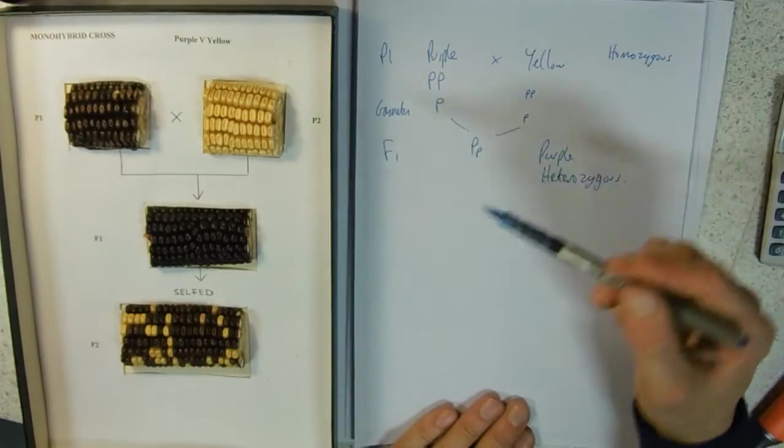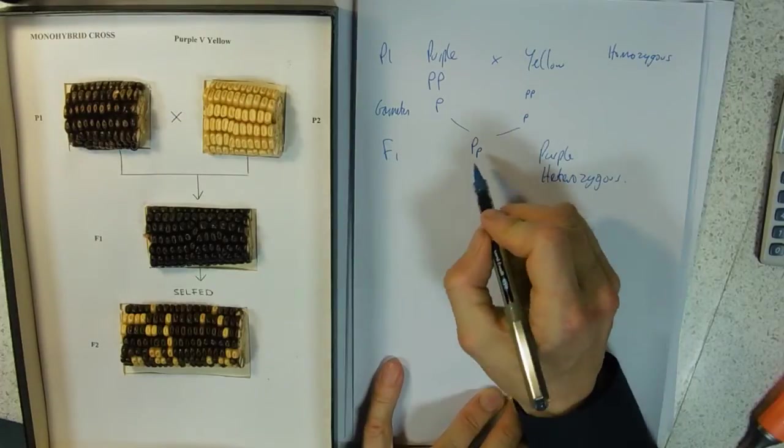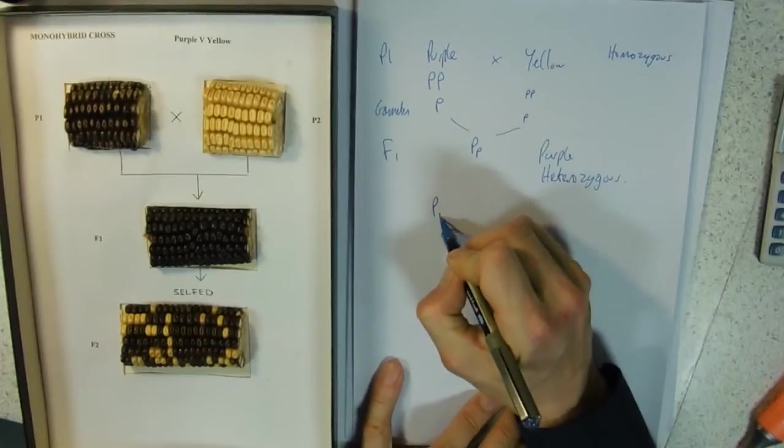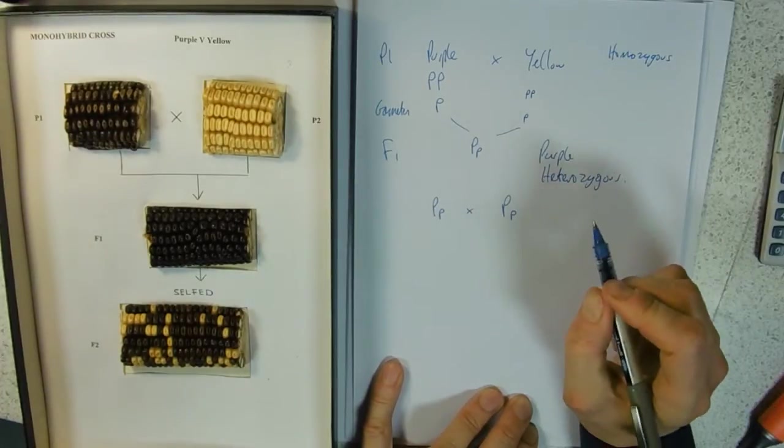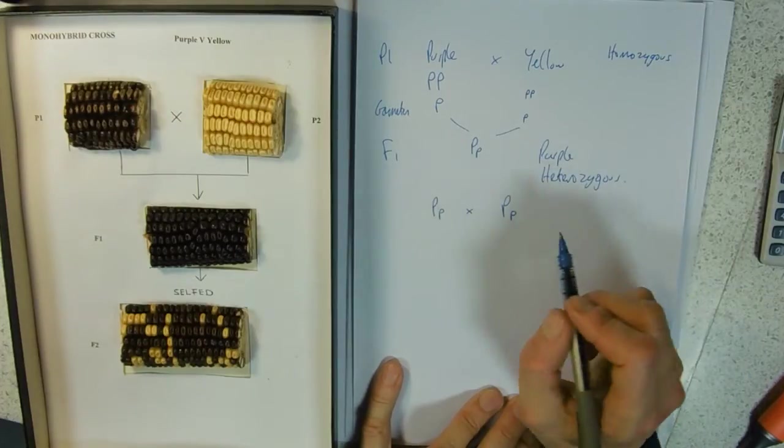Then what have they done? They have selfed this, so they've taken this cob and crossed it with another very similar one - another heterozygous purple.